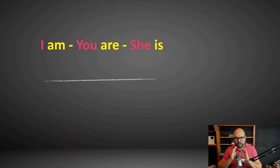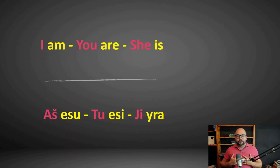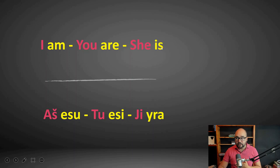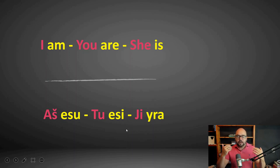Let's look only at the singular present tense. 'Aš esu' — I am. 'Tu esi' — you are. 'Ji yra' — she is. So that is 'aš esu,' 'tu esi,' 'ji yra.' This is an affirmative sentence in the present tense.